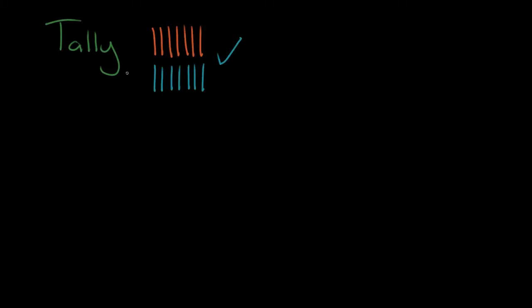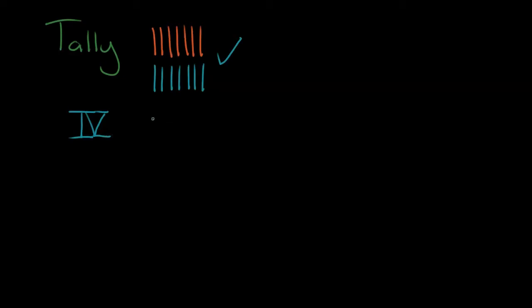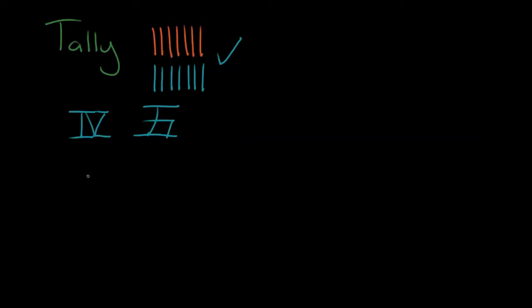We don't actually know too much about what they did with the sticks or why they marked those notches, but the first number system was very likely just single lines — notches on a stick. Later on, other number systems came around. We have Roman numerals, which would be something like this. China has its own number systems. And then the system most people use today, the common system used around the world, is the base 10 system.